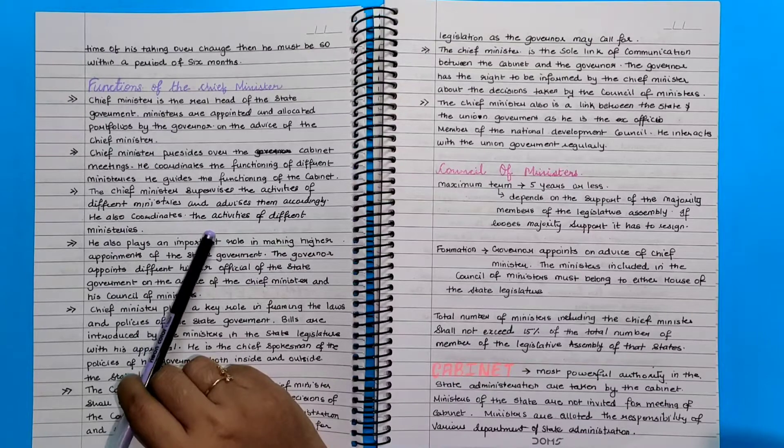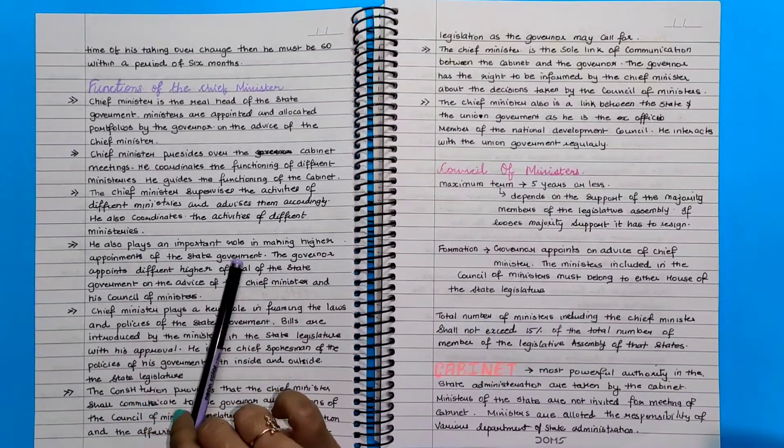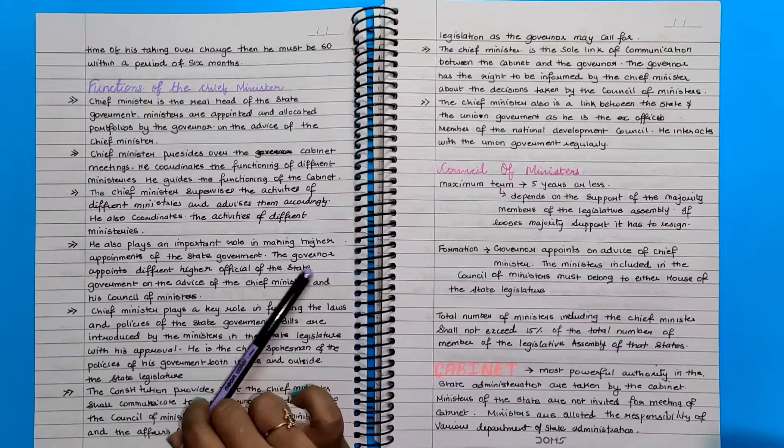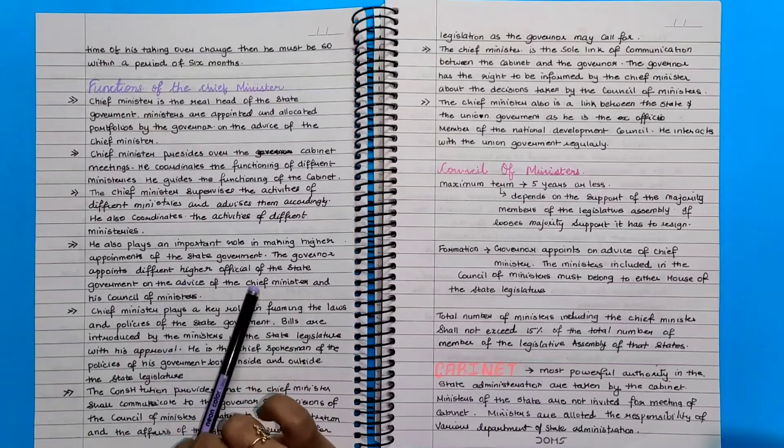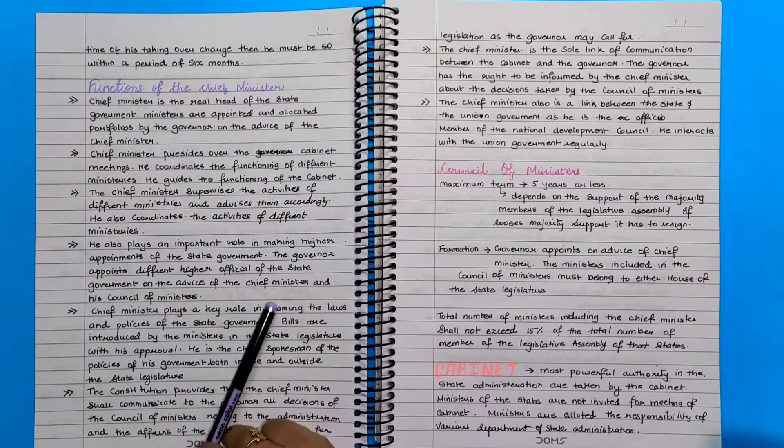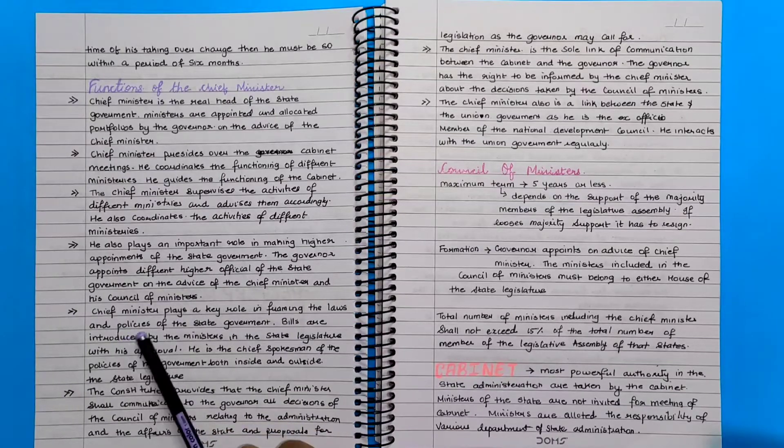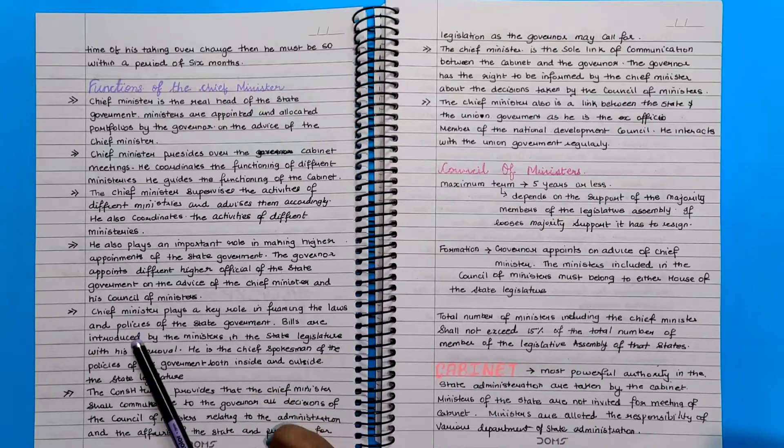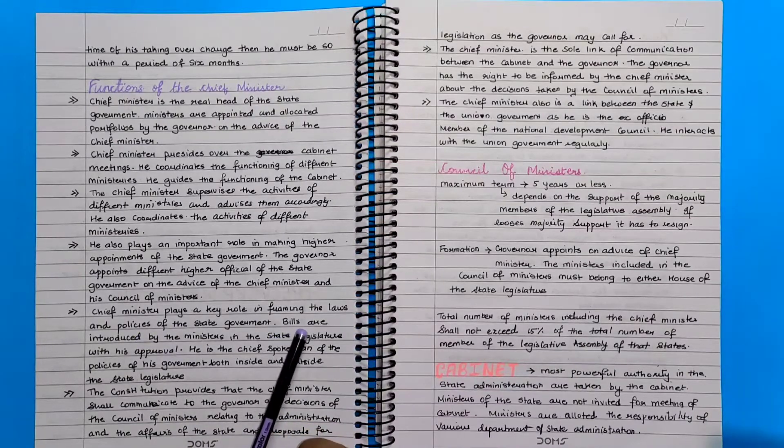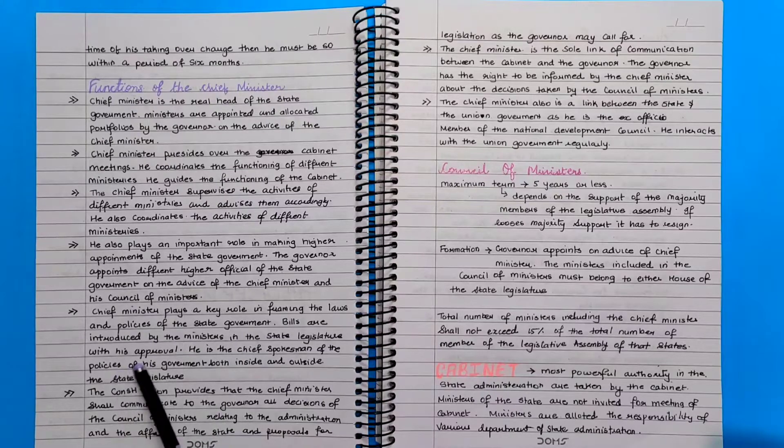The chief minister supervises the activities of the different ministers and advises them accordingly. He also coordinates the activities of different ministries. He also plays an important role in making higher appointments of the state government. The governor appoints different higher officials of the state government on the advice of the chief minister and his council of ministers. Chief minister plays a key role in framing the laws and policies of the state government. Bills are introduced by the ministers in the state legislature with his approval.